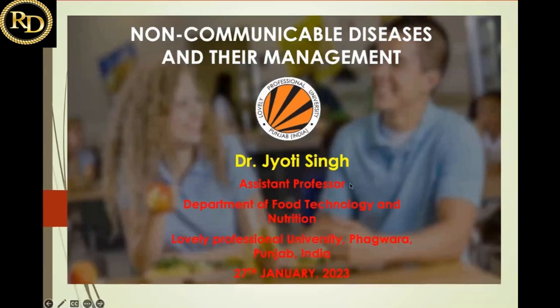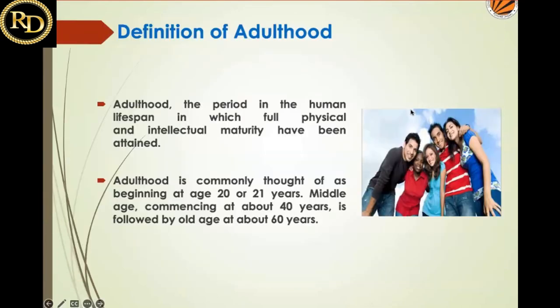We will focus on adulthood, the period from where we can prevent or manage non-communicable diseases. Many people have confusion about the actual age group of adulthood. Adulthood spans the maximum years of the lifespan — up to 40 to 50 years — and starts from 19 years of age, since teenage spans 13 to 19 years.